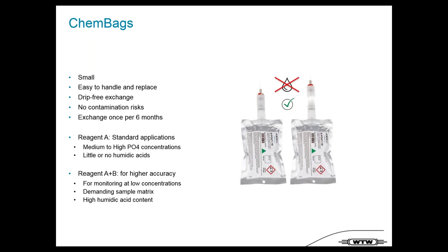Based on the low reagent consumption, we replaced bottles with chemical bags — small, easy-to-handle cam bags that are drip-free when exchanged, eliminating contamination risk. They only need replacement every six months. We have standard Reagent A for normal applications and an additional Reagent B for higher accuracy, especially when high humic acid is present.